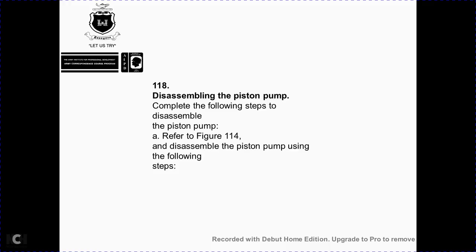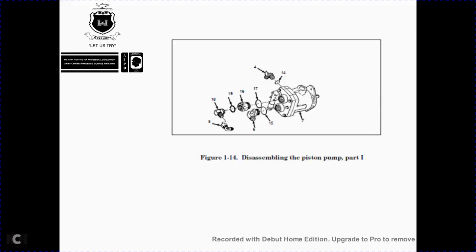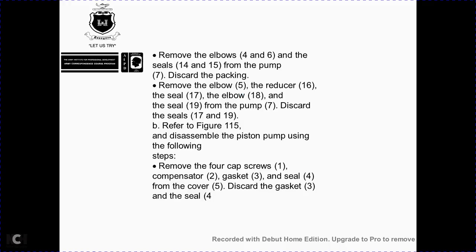Disassembling the piston pump. Complete the following steps (refer to figure 1-14): remove elbows 4 and 6 with seals 14 and 15 from pump 7 and discard the seals. Remove elbow 15 with reducer 16, seal 17, elbow 18, and seal 19 from pump 7; discard seals 17 and 19. Refer to figure 1-15: remove four cap screws 1, compensator 2, gasket 3, seals 4, and cover 5. Discard gasket 3 and seal 4.